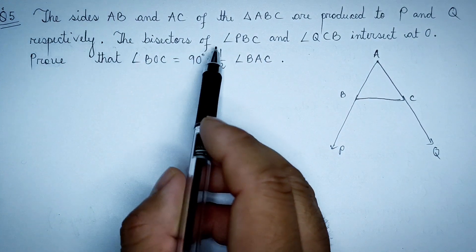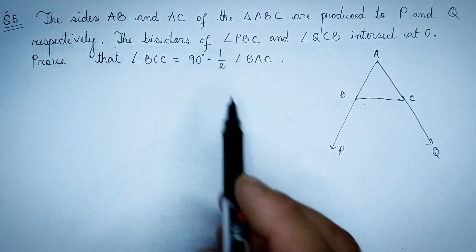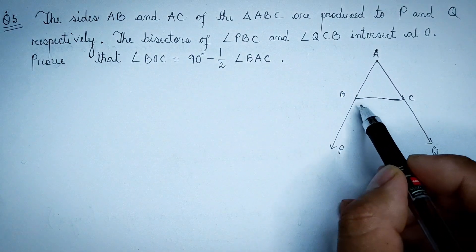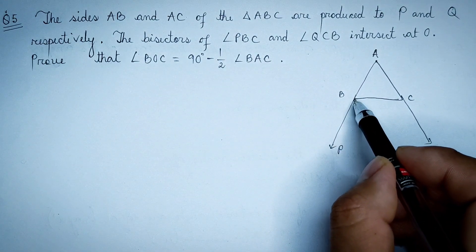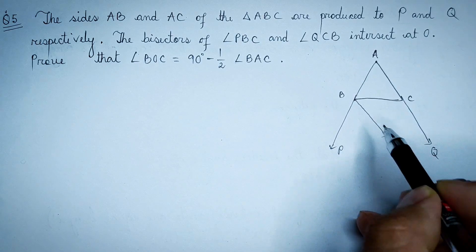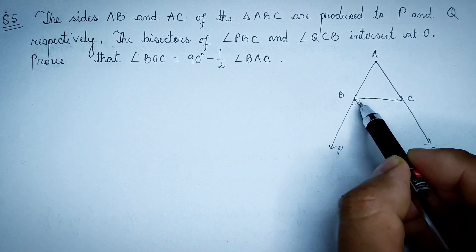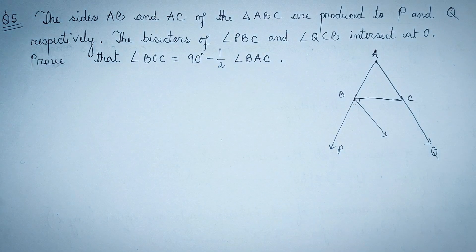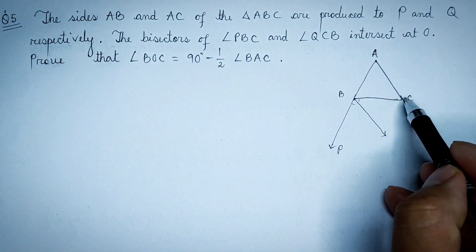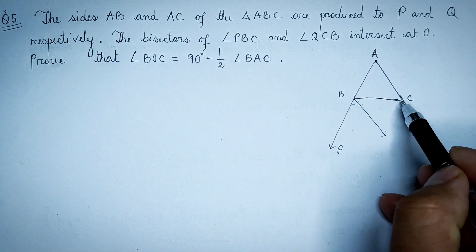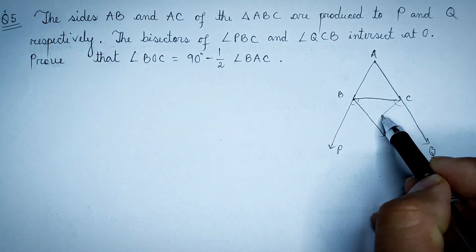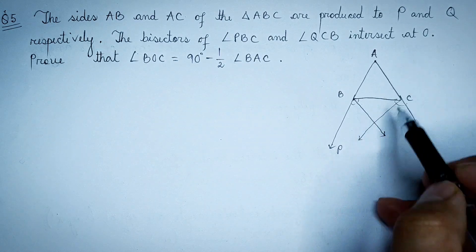The bisectors of angle PBC. PBC is not the same as the angle of angle PBC. QCB is not the same as the angle of angle PBC.